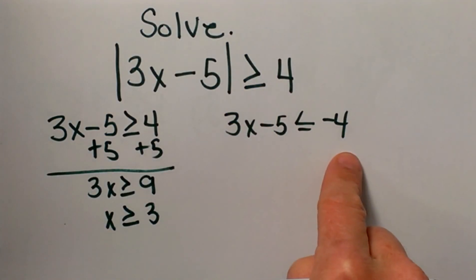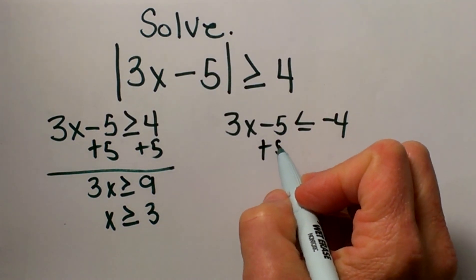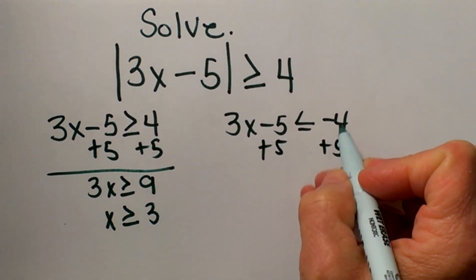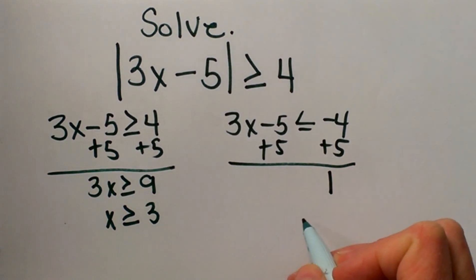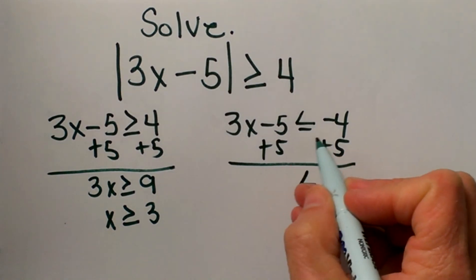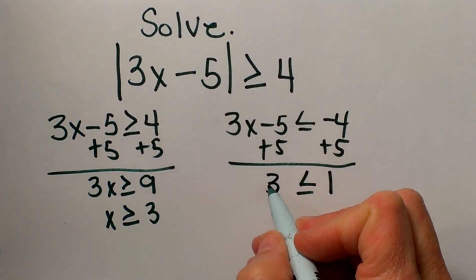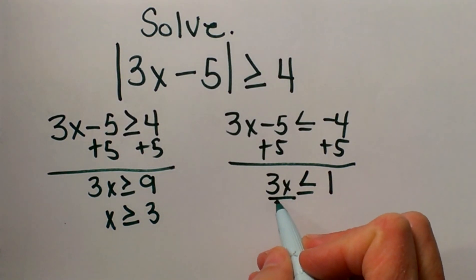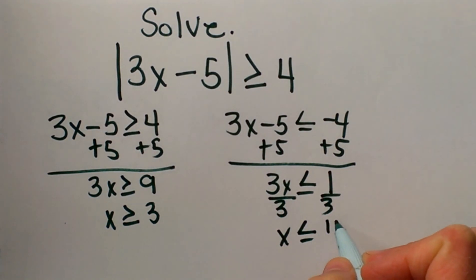Now for the other case, I'm going to add 5 again. But this time when I add 5 to negative 4, I get 1. So I have 3x ≤ 1. Then dividing by 3, I get x ≤ 1/3.